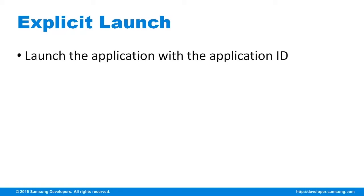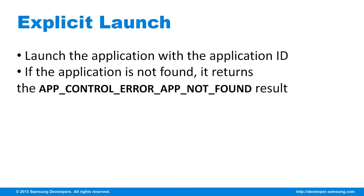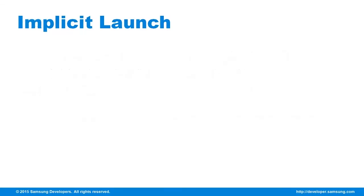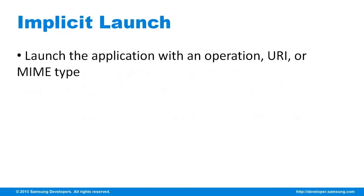First of which is the explicit launch. Here the App ID is needed. Since you are setting a specific application, there might be a case that you don't have it installed on your device — you will get an app not found result. Here is a code snippet for calling the calculator into your current app. The other one is the implicit launch.